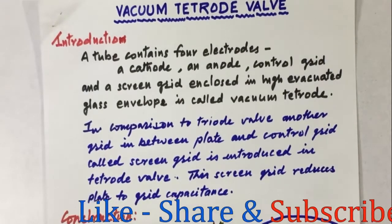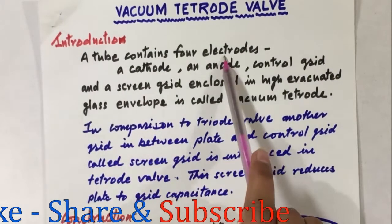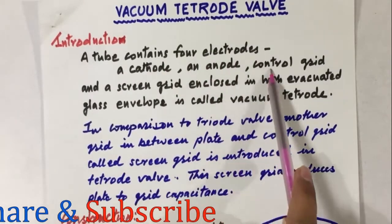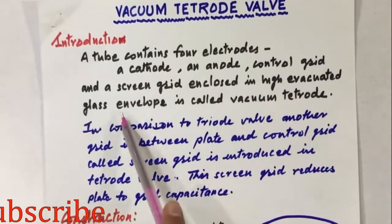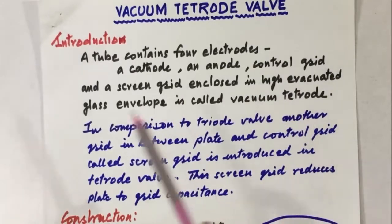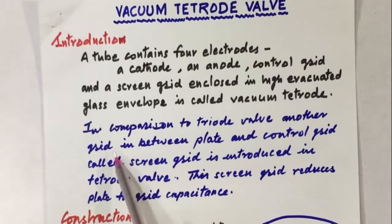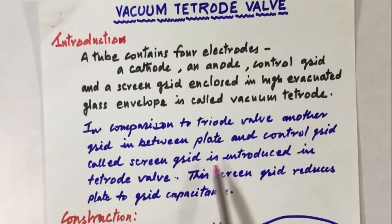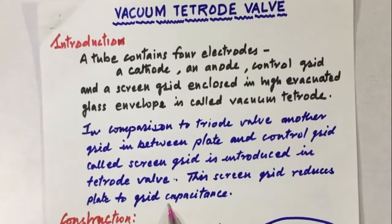We will explain the introduction. A tube containing four electrodes — a cathode, an anode, a control grid and a screen grid — enclosed in a highly evacuated glass envelope is called the vacuum tetrode. In comparison to the triode valve, another grid between the plate and the control grid called the screen grid is introduced. In the tetrode valve, this screen grid reduces the plate-to-grid capacitance.